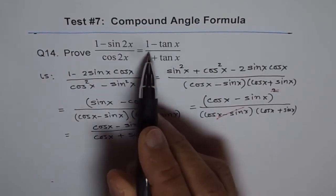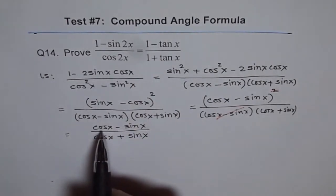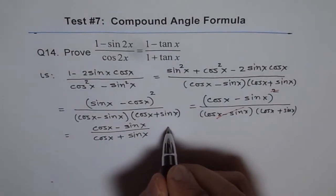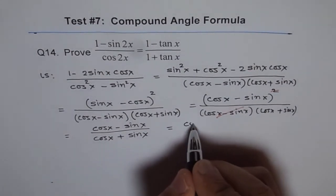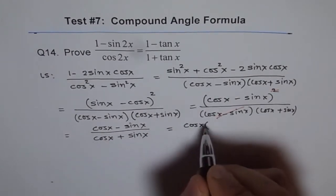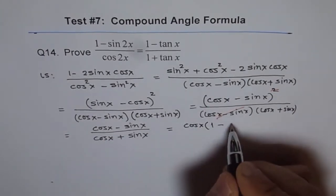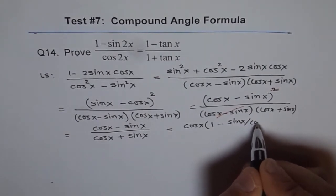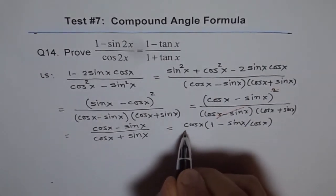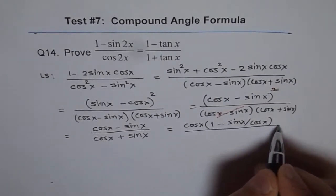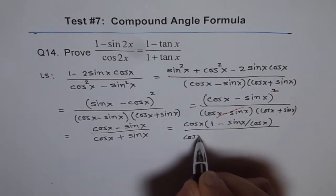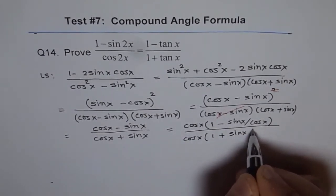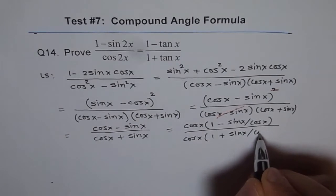We need to prove one minus tan x, so we don't want cos here. Let's factor out cos x. If we factor out cos x from the numerator, we get 1 minus sin x over cos x. And factoring cos x from the denominator gives 1 plus sin x over cos x.